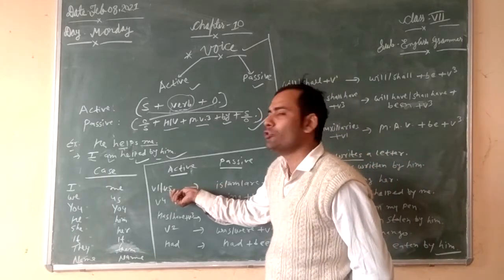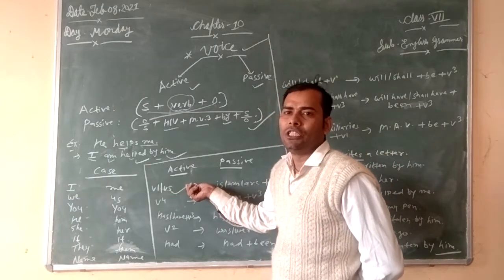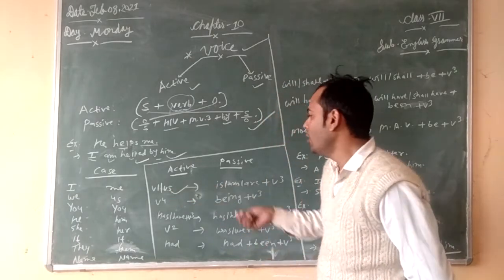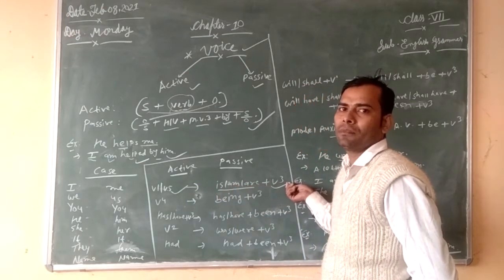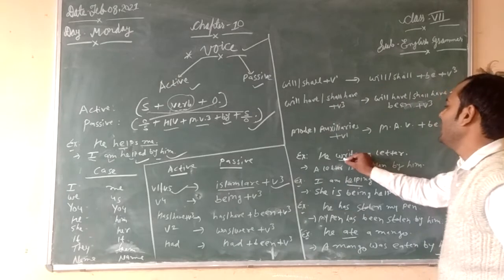In active voice, we have verb V1 and V5. When it comes to passive voice, then we have is/am/are plus verb 3. This is an example from earlier.